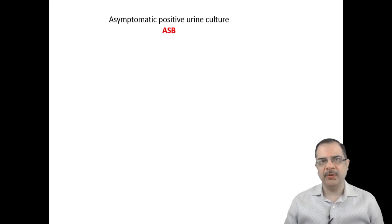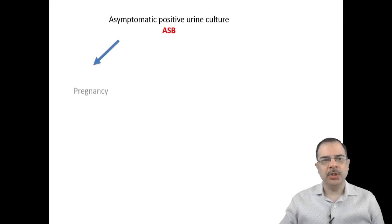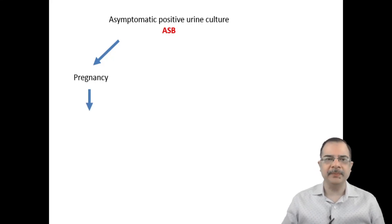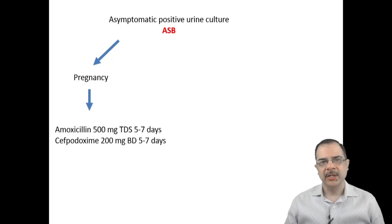There is a term known as asymptomatic bacteriuria (ASB): there are no symptoms of urine infection, but urine culture shows bacteria more than 10 to the power of 5 colony-forming units per mL of urine sample. If ASB is present in pregnancy, it must be treated with antibiotics that are safe in pregnancy — such as amoxicillin 500 mg three times a day, or oral cephalosporins — given for 5 to 7 days.